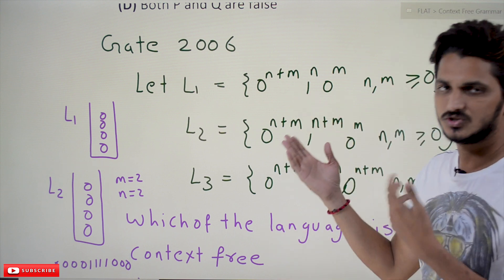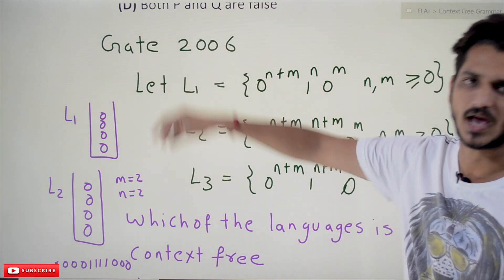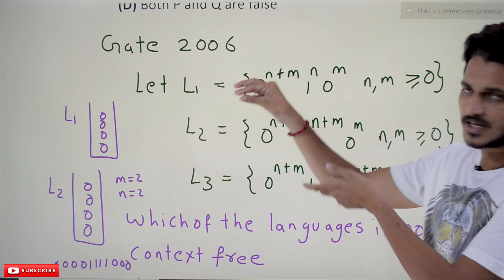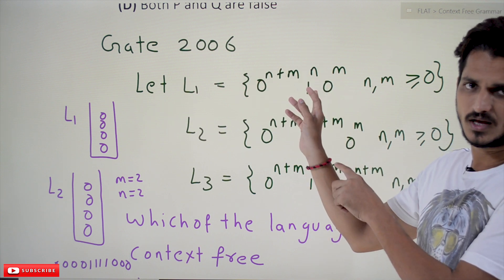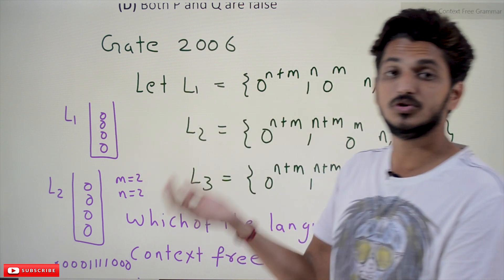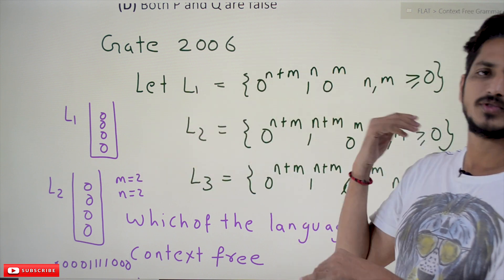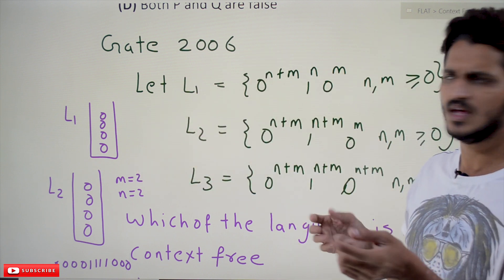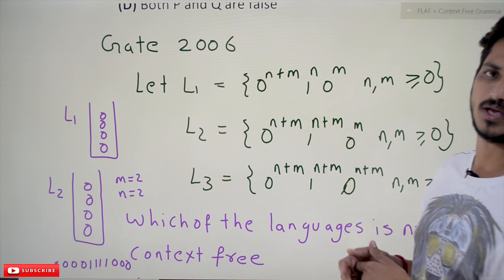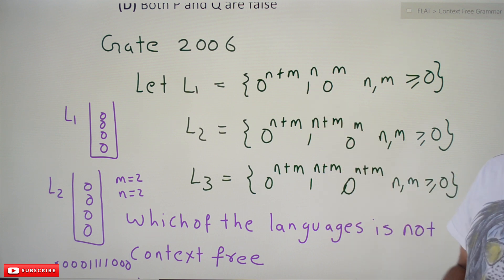Here we have considered n=2, m=2. Push the zeros onto the stack. Whenever you find ones, pop the zeros from the stack. After that, if you find zeros, pop the zeros from the stack. If the stack is empty, we have matched n+m zeros, then 1^n, then 0^m. It is possible, that's why L1 is a context-free language.